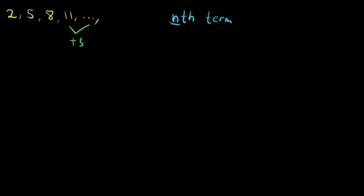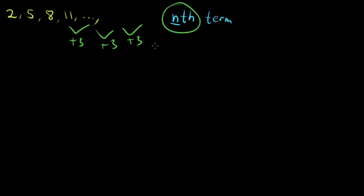For example, if you want the 5th term, just add 3 once more. If you want the 7th term or the 10th term, keep on adding 3. That method is convenient if n is small. But what if you're asked for the 100th term or the 300th term? It's no longer convenient to keep adding. So maybe you could use a formula instead.